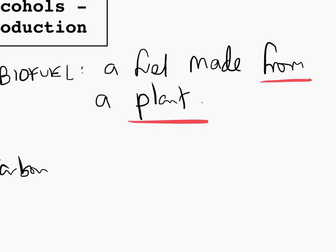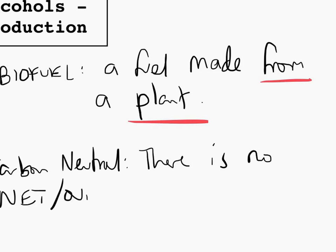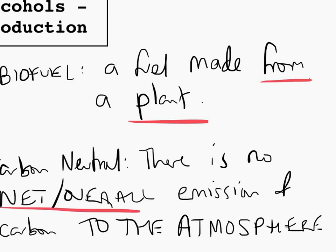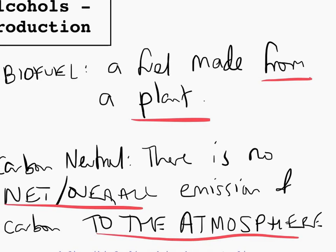And then carbon neutral, they are very specific in terms of what they want. So carbon neutral is where there is no net or overall, doesn't matter which word you use there, emission of carbon to the atmosphere. And mentioning the atmosphere is imperative in getting the mark here. The two key points here is this bit and this bit in terms of getting the mark for that definition.